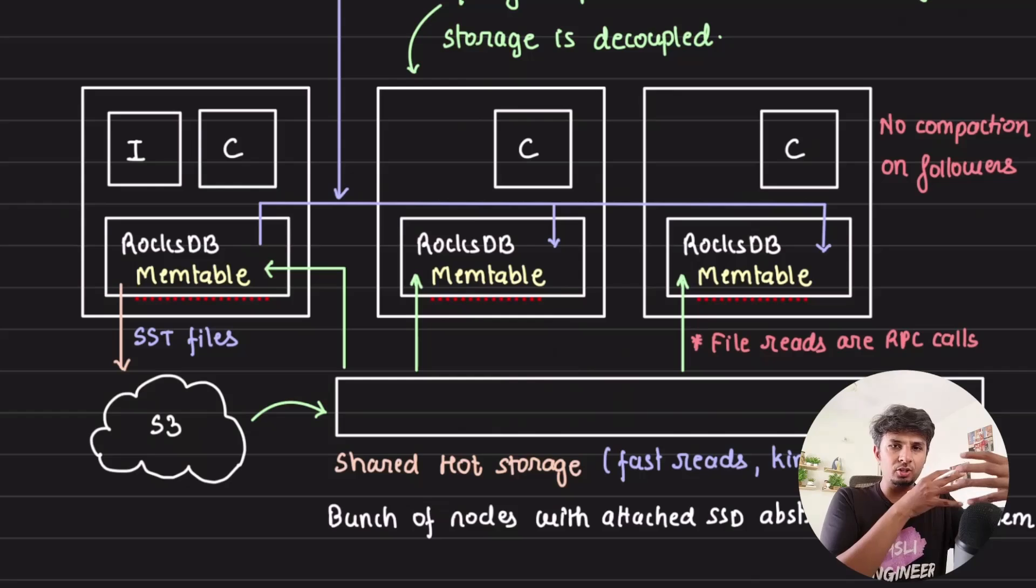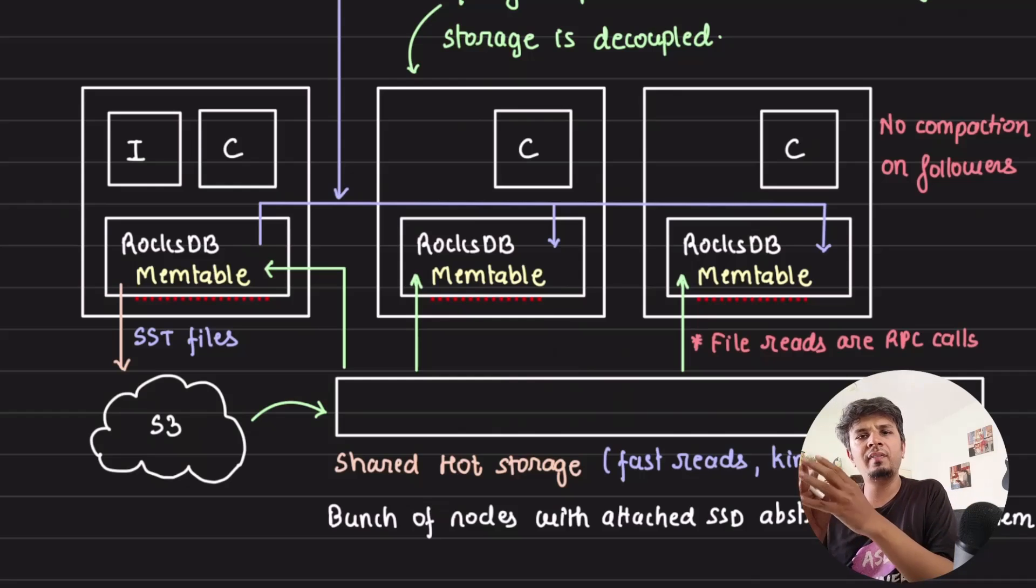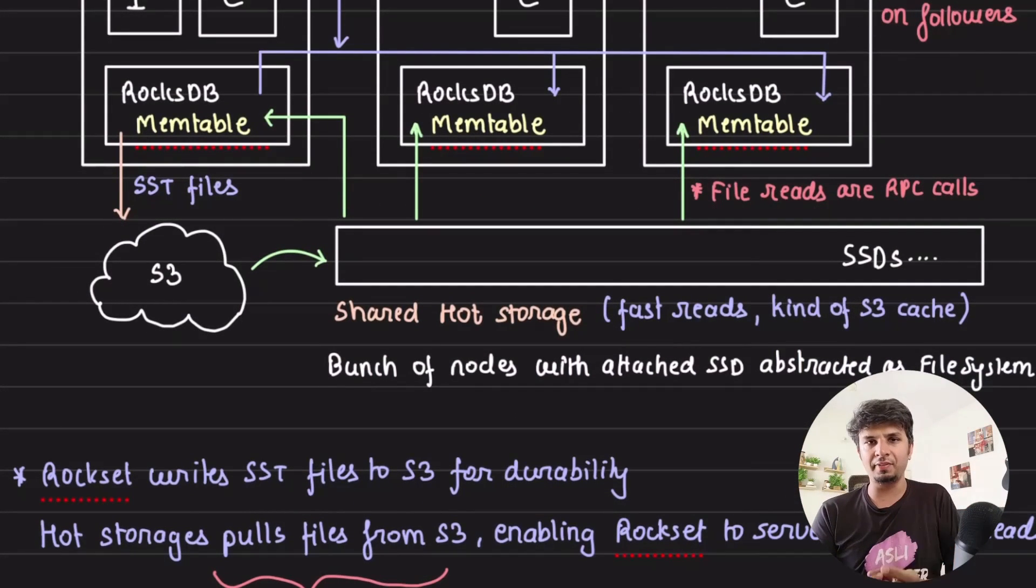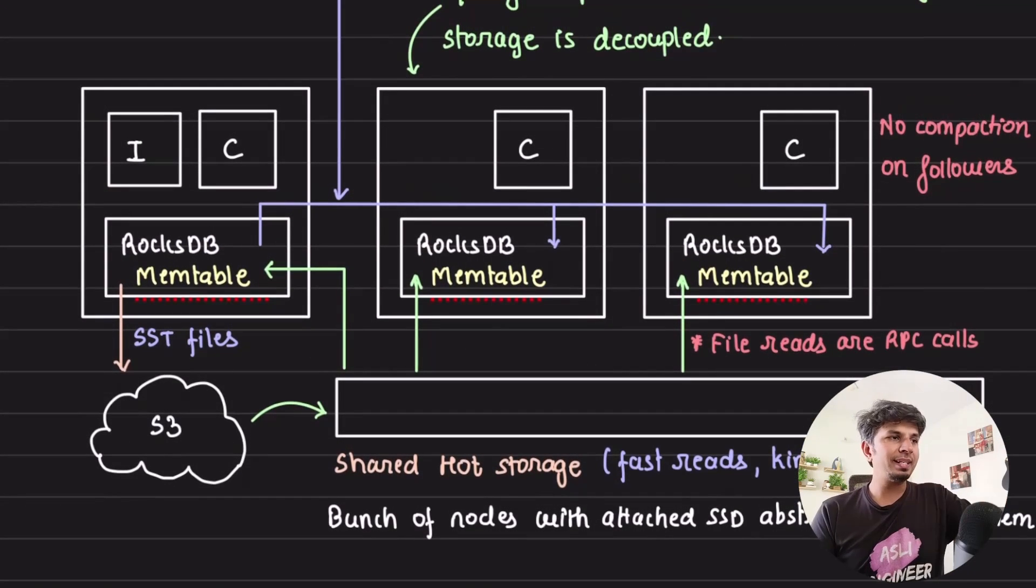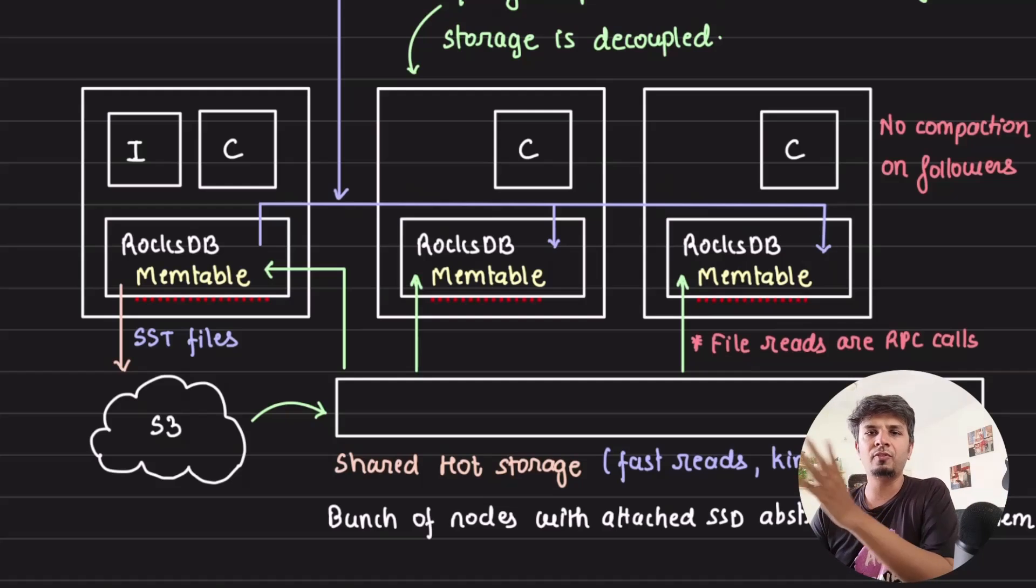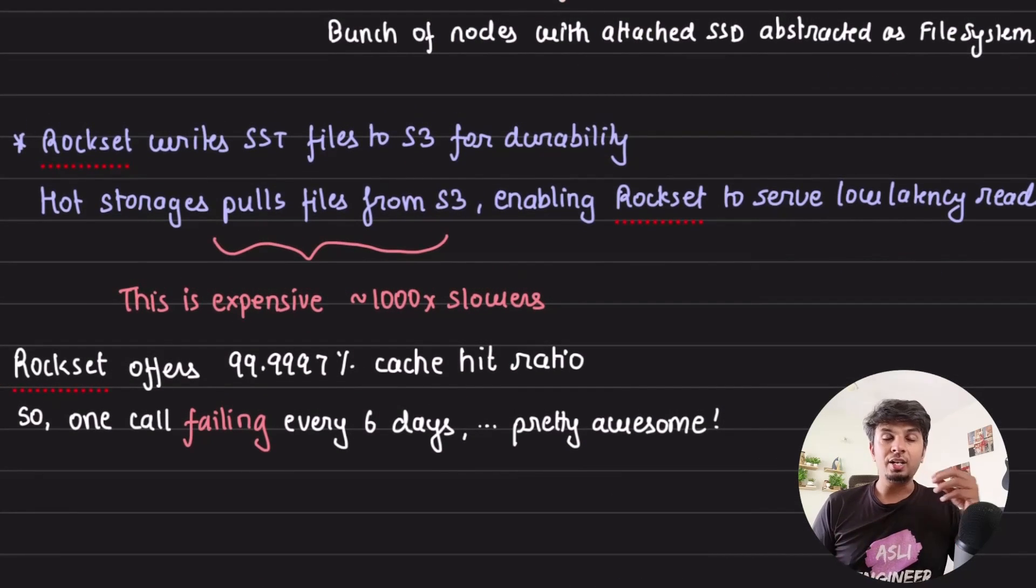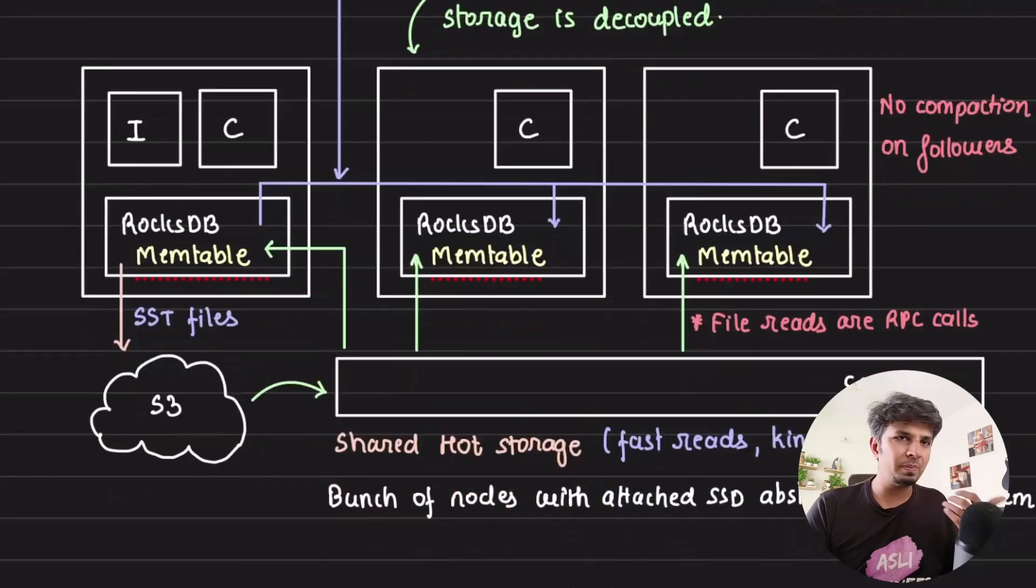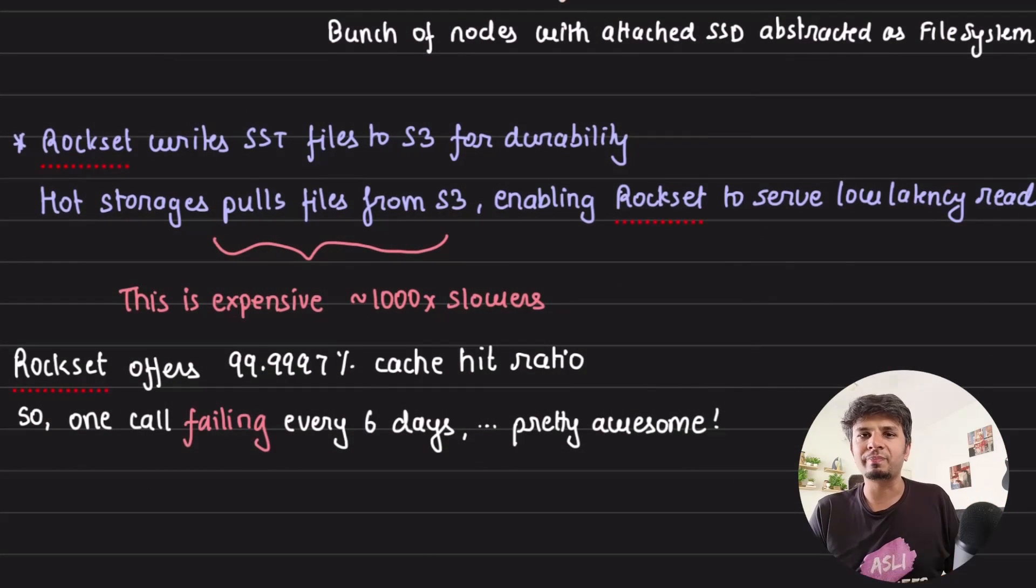So this is how, this is how they leverage the storage compute separation and added an interesting fragment to it, where they replicate the changes in the mem table to each of the compute node. And that's how the data, which is very recently written is almost immediately available to query. This is super. And this is how you have to think of when you're building a real time analytics database. And this is something that I found really fascinating when I was going through Rockset's internal, because it ensured that my recently written writes and updates are almost immediately available for query. And this is how, and this is what you typically need to think of when you're building a real time analytics database, because you're optimizing for something. So then you have to be okay giving up on something. The overall SLA that you are seeing is that Rockset offers a 99.9997% of cache hit ratio. So cache hit ratio, basically that the data that you are querying is almost always available in SSDs. You don't have to go to S3 and read it, which is pretty awesome. So one API call failing every six days. It's pretty awesome.